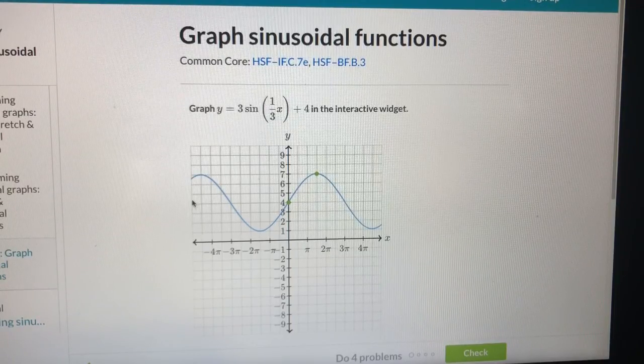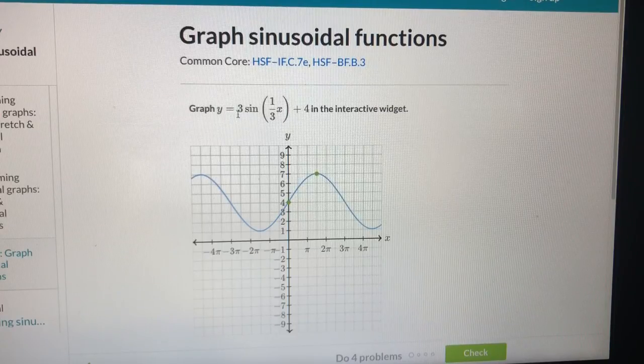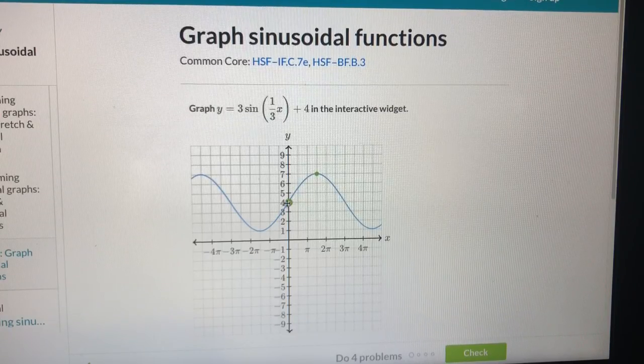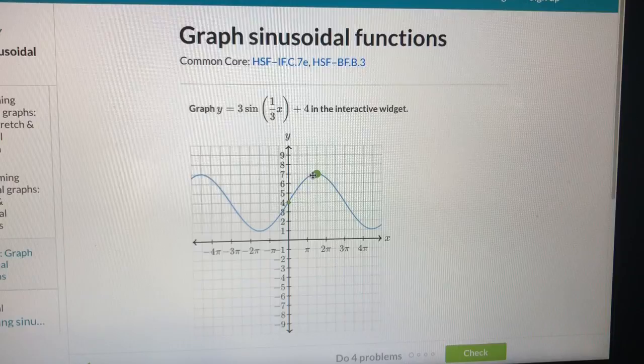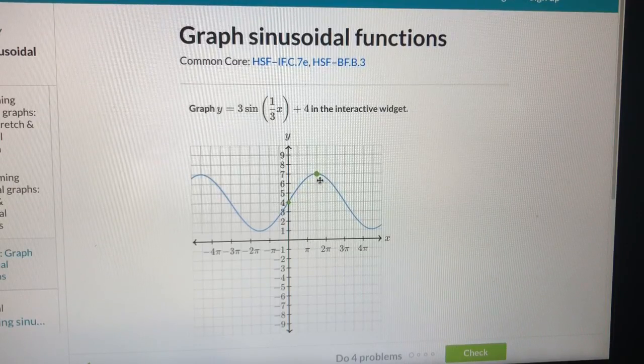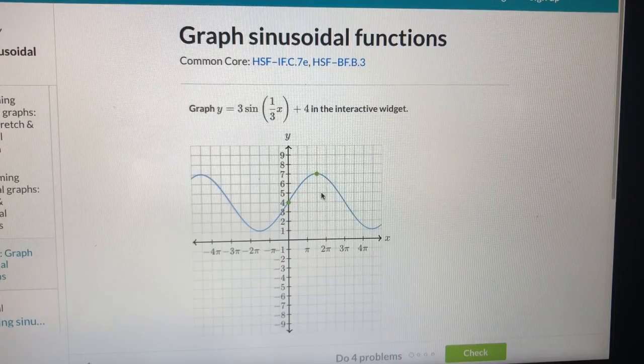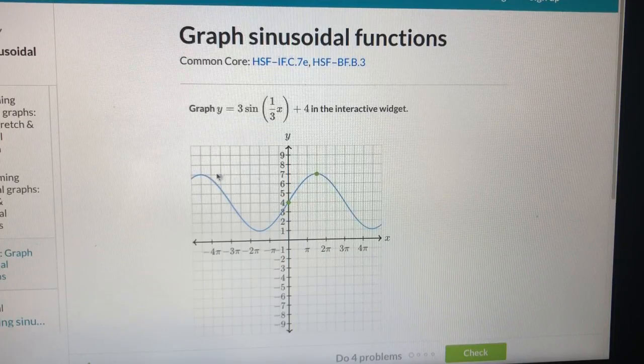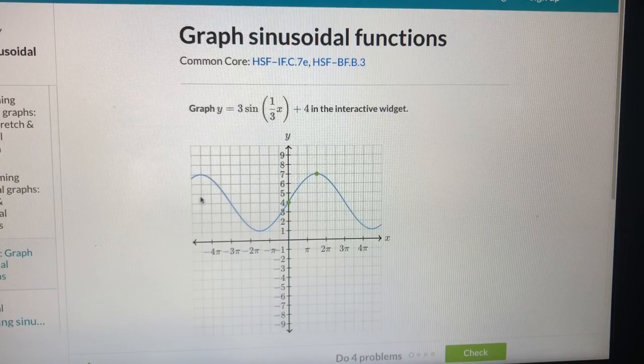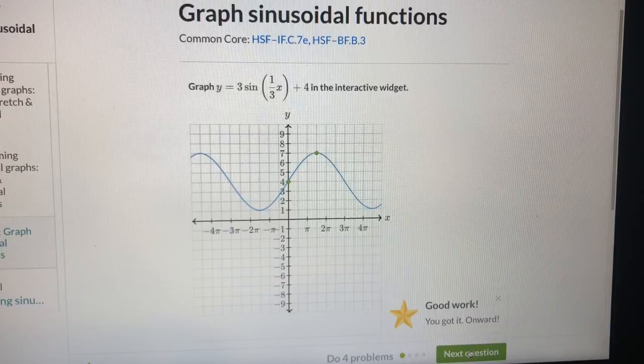Now we check it again. Midline. Midline at y equal to 4. And amplitude plus 3 is 7. And the period will be 6. See, from this point to this point, exactly 6. Okay. Yes, we are right.